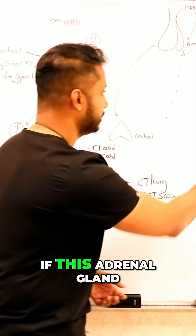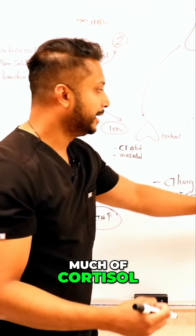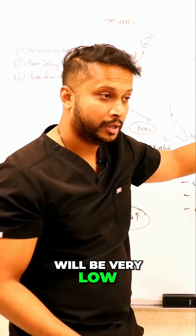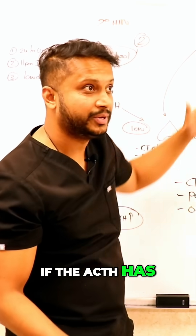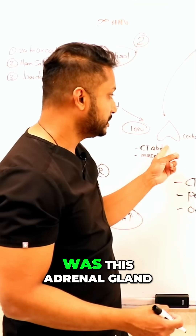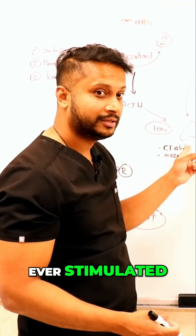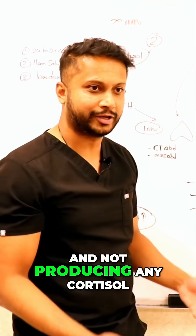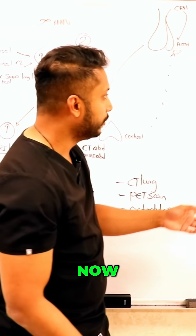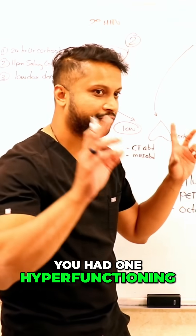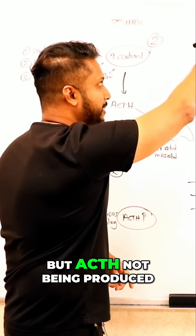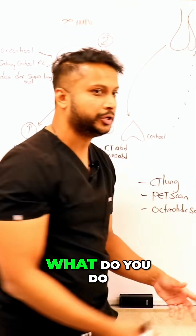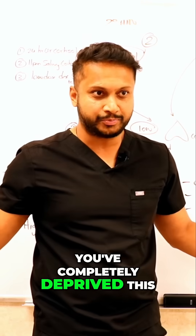Because imagine: if this adrenal tumor, this adrenal gland, is producing way too much cortisol — is that giving negative feedback to ACTH? Yes, which means your ACTH will be very low for a long time. If the ACTH has been very low for such a long time, was this other adrenal gland ever stimulated? It wasn't — and therefore this adrenal gland has been atrophied and not producing any cortisol. So you had one hyper-functioning gland, ACTH not being produced, and the other adrenal gland not producing any cortisol.